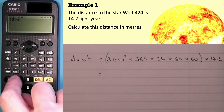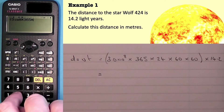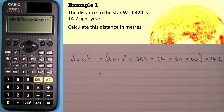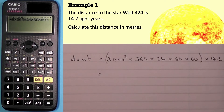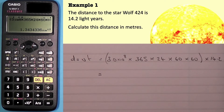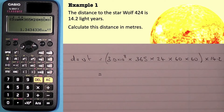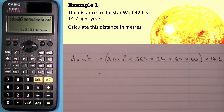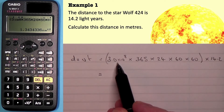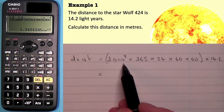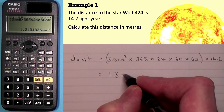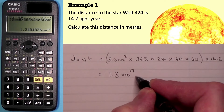In brackets: 3 times 10 to the power of 8, times 365 times 24 times 60 times 60, close brackets — that calculates one light year — then multiply by 14.2. That gives us 1.3434336 times 10 to the power of 17 meters. Since the speed of light is written in the data sheet to two significant figures, we round to two significant figures: 1.3 times 10 to the power of 17 meters.